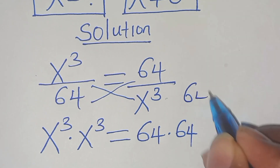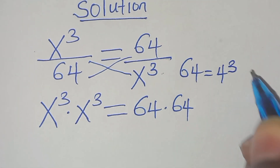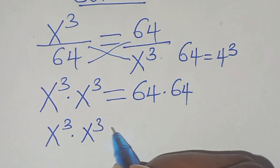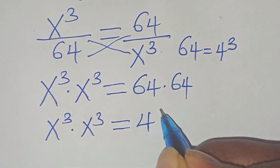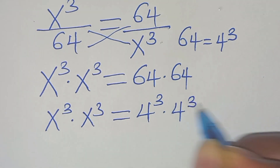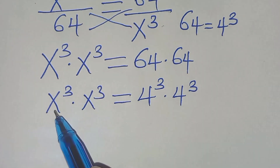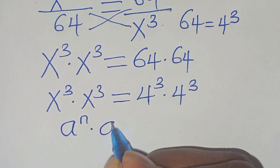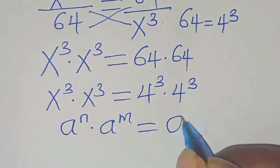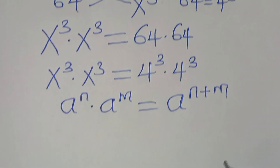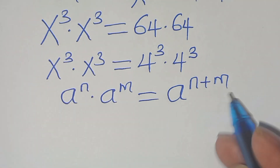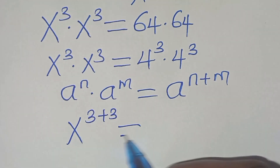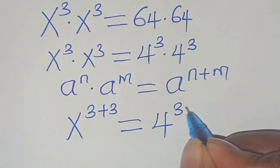We can express 64 as 4 to the power of 3. So, we have x to the power of 3 times x to the power of 3, this is equal to 4 to the power of 3 times 4 to the power of 3. The next step: x³ × x³ is in the form of a to the power of n times a to the power of m, which can be expressed as a to the power of n plus m. Applying this exponent property, we have x to the power of 3 plus 3, which equals 4 to the power of 3 plus 3.